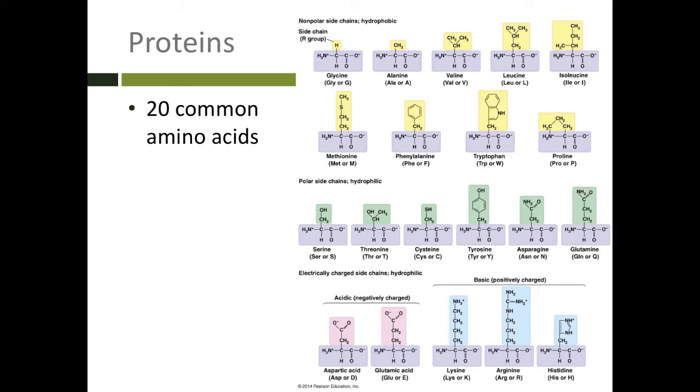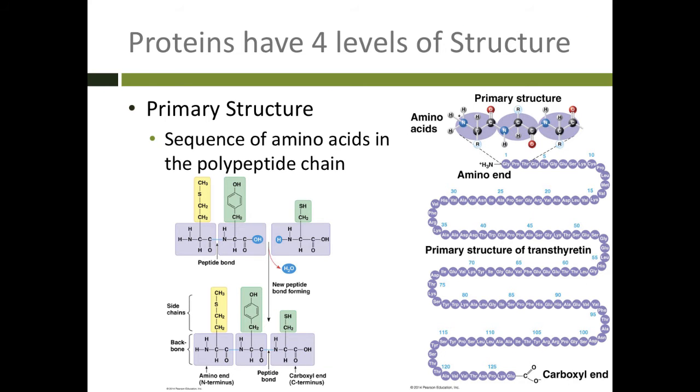We can have four different levels of structure. The primary structure of a protein is the sequence of those amino acids in the polypeptide chain. Think about beads on a string. You could put on a green bead, and a blue bead, and a yellow bead, and maybe two orange beads. That would be the sequence of beads on your string. Likewise, when we make a protein, we're going to put a sequence of specific amino acids in a row on a string. That's the primary structure.